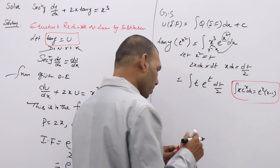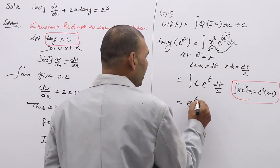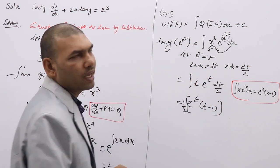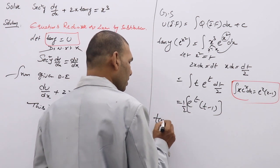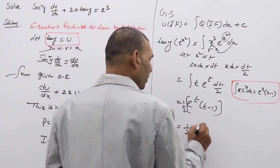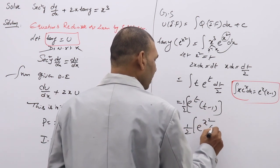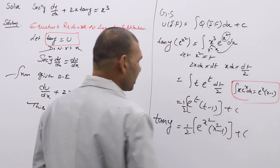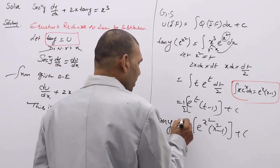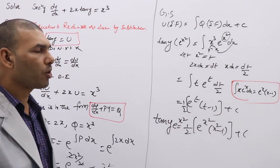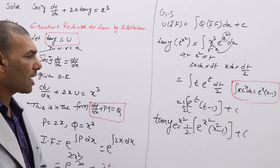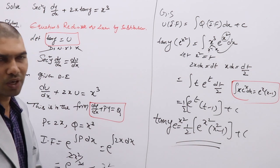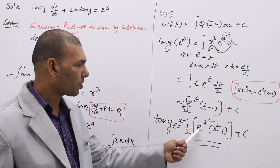Using this formula, writing back t = x², we get: tan y · e^(x²) = (1/2)·e^(x²)·(x² − 1) + c. If you want the final answer, you can cancel e^(x²) from both sides, giving: tan y = (1/2)·(x² − 1) + c·e^(−x²). Otherwise you can also stop at tan y · e^(x²) = (1/2)·e^(x²)·(x² − 1) + c.